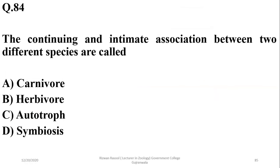Question 83: The continuing and intimate association between two different species is generally called symbiosis — D.